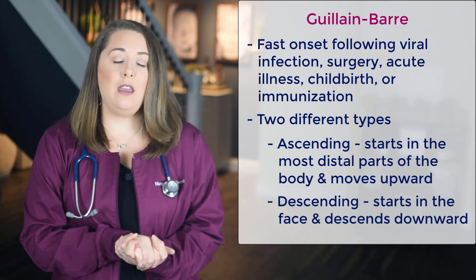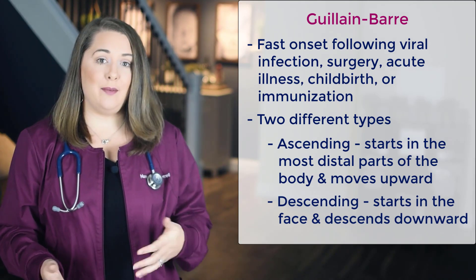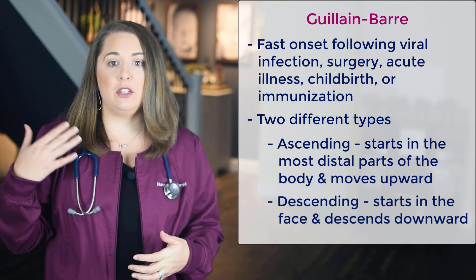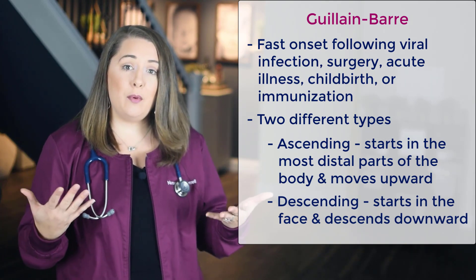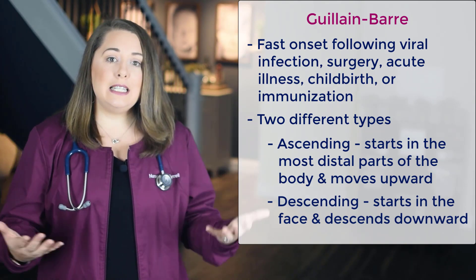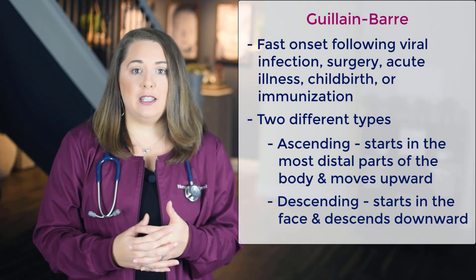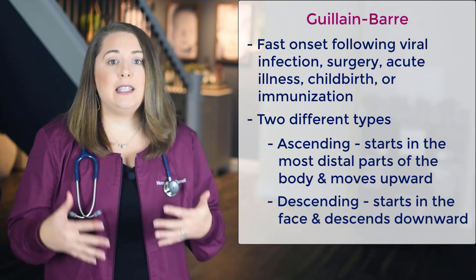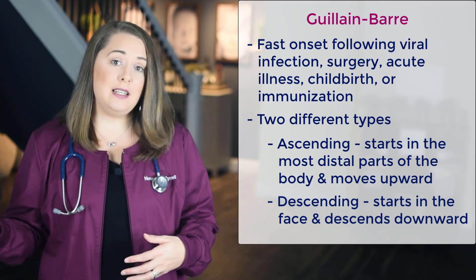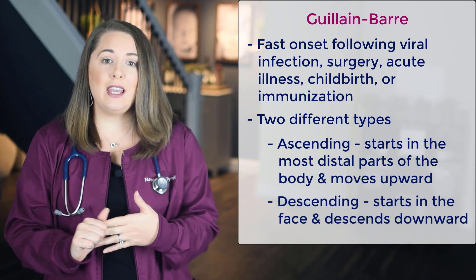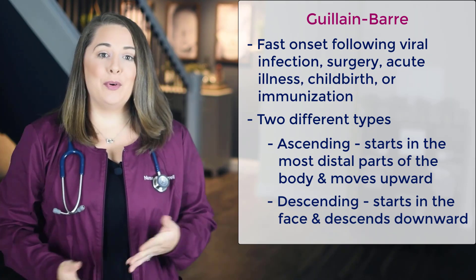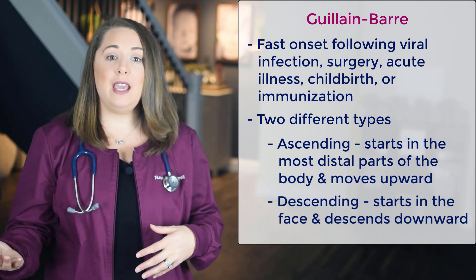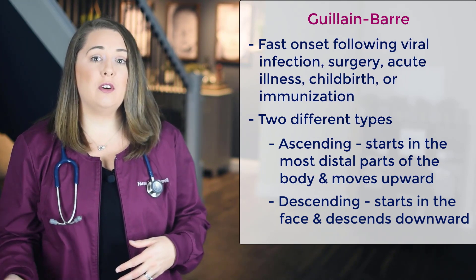There are two different types of Guillain-Barré: ascending and descending. Ascending is when the paralysis starts in the most distal parts of the body — it'll start in the feet and legs and ascend upward. Descending paralysis is when the paralysis starts in the face and descends downward. Descending Guillain-Barré patients are going to deteriorate a lot quicker. Progression of the paralysis is going to be pretty quick — within a few hours or a few days — whereas MS can take a few years to fully progress.